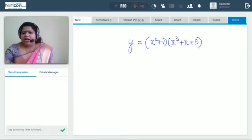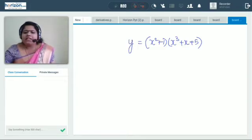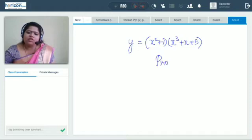So here we got two functions multiplied together. So to find the derivative of this, product rule is the best option to go for. What does it say? We will look into the rule.